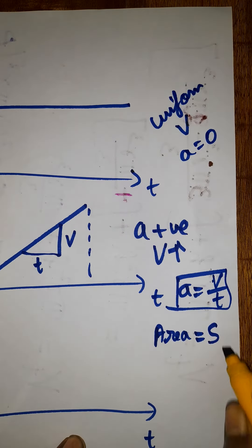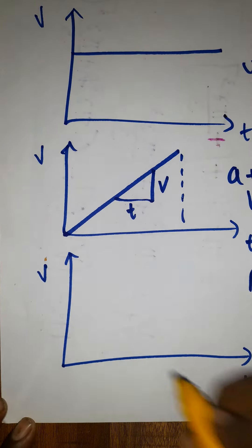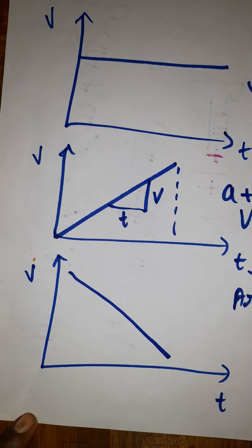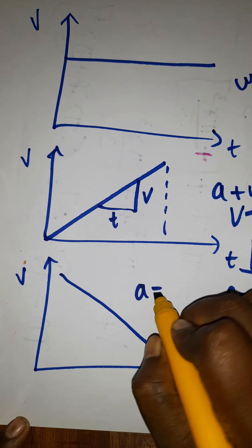Now the next one: velocity versus time graph where velocity is decreasing with respect to time. This is called retardation. The acceleration is going to be negative.